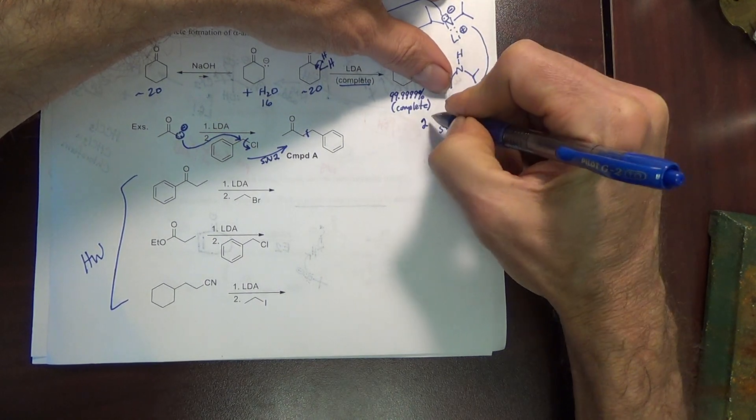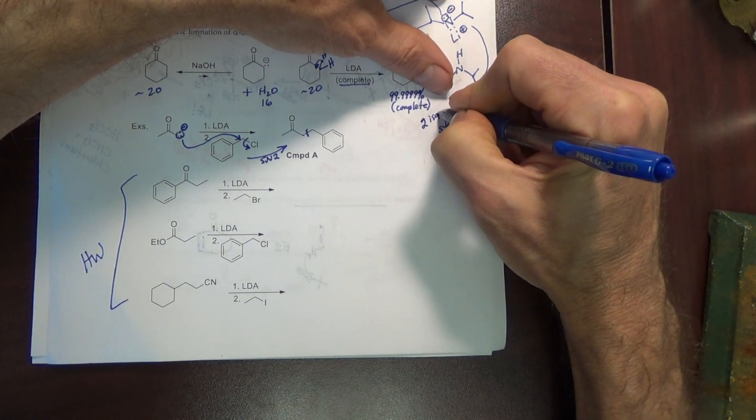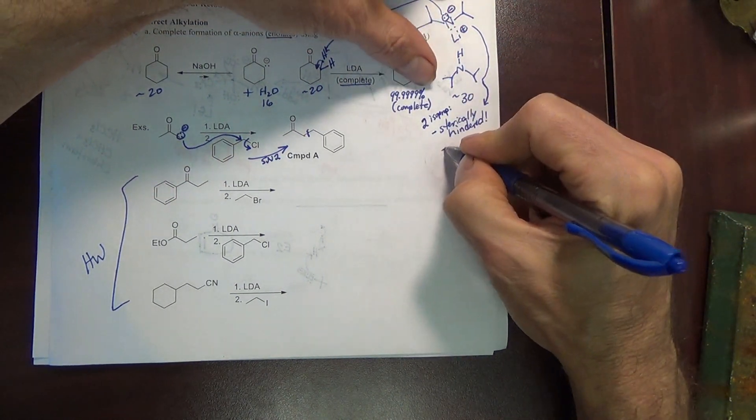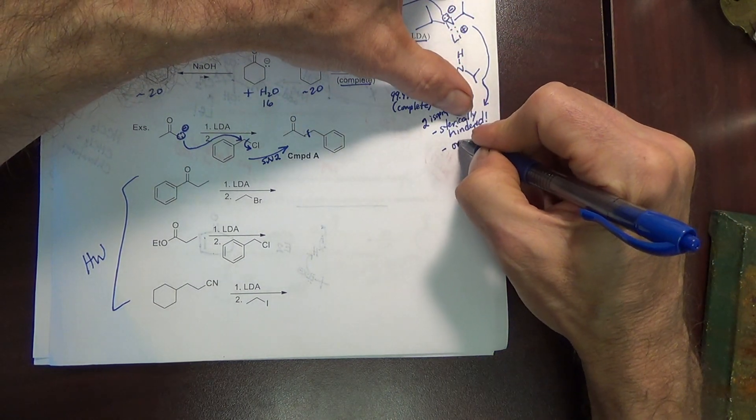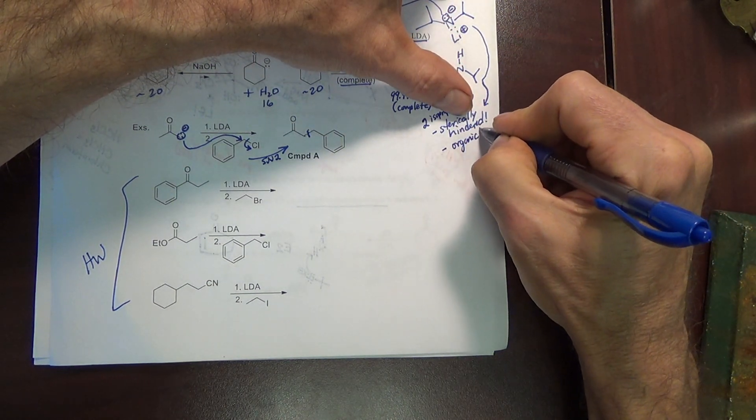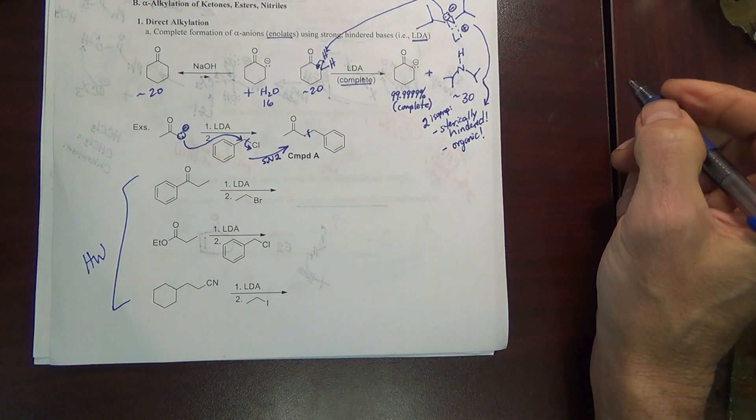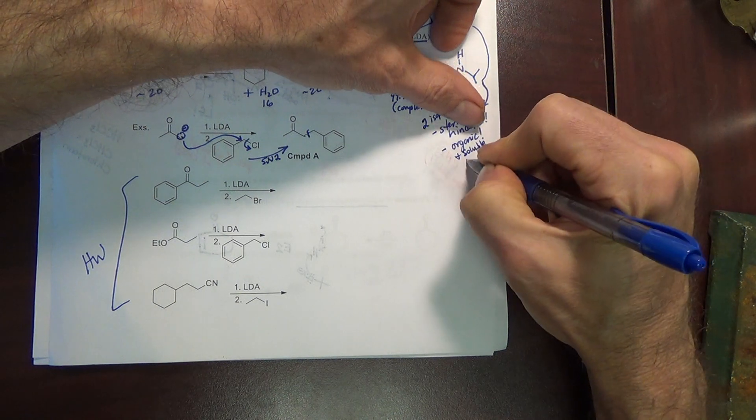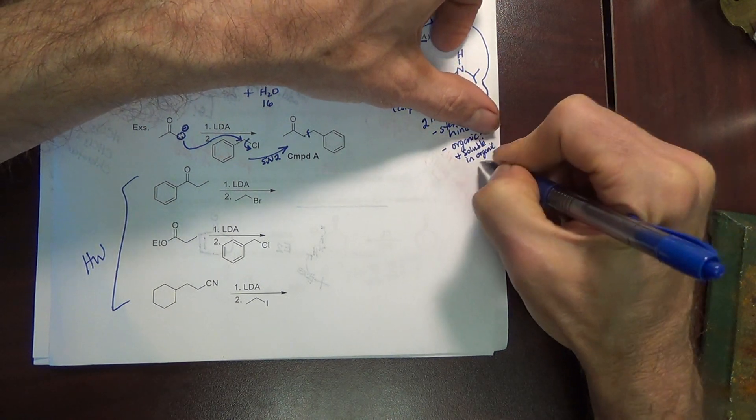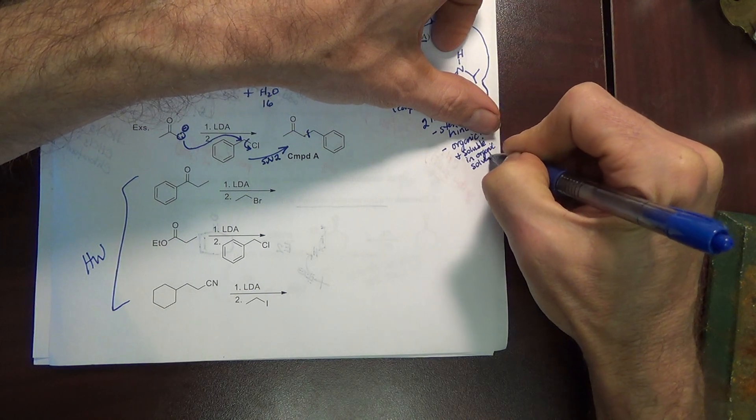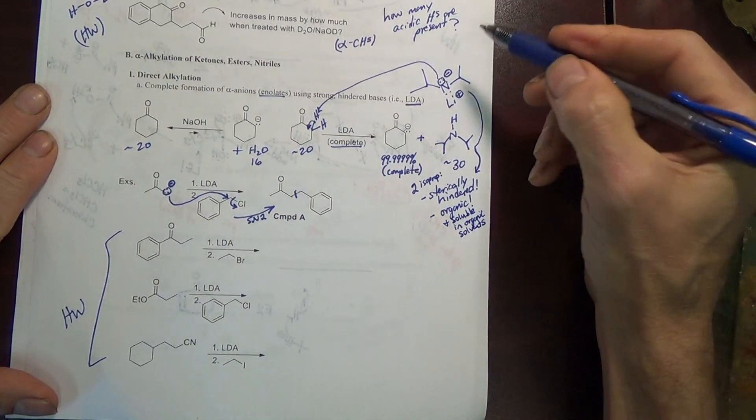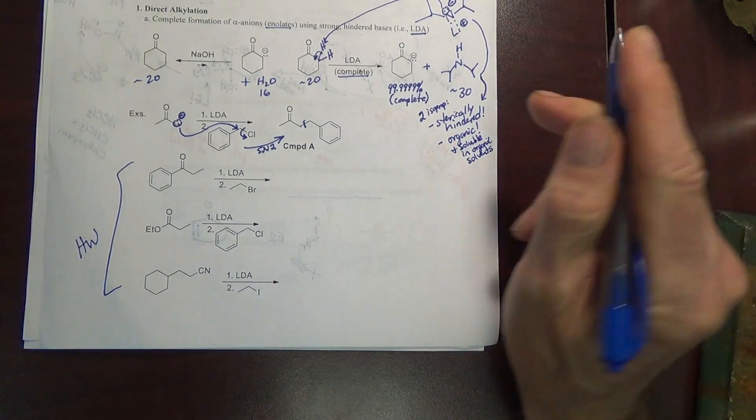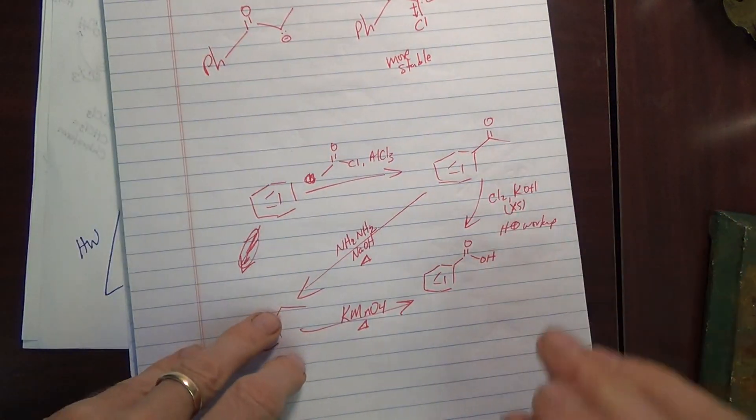Let me kind of add this. Two isopropyls. What does that do? Makes it sterically hindered. It also makes it organic and soluble in organic solvents, even though it is an anion.